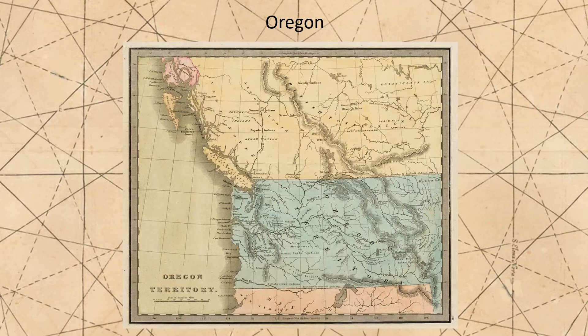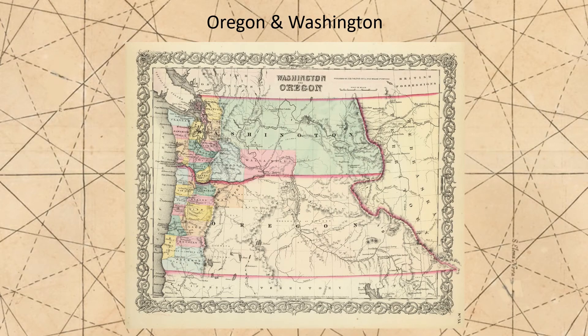Some of the immigrants who had moved out to Oregon decided settlements in the Willamette Valley were too crowded, so they headed north of the Columbia River. They felt that the Oregon Territory was too far away and not concerned enough with their needs, so they petitioned Congress to create a new territory for them. As a result, in 1853, the Washington Territory was created from the northern half of the Oregon Territory. The border between the two territories followed the Columbia River until it turned sharply northward, at which point the border followed the 46th parallel.